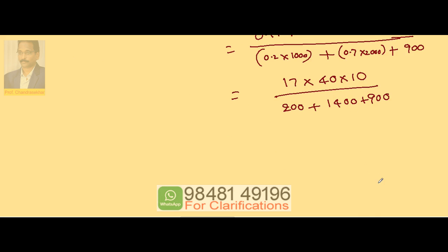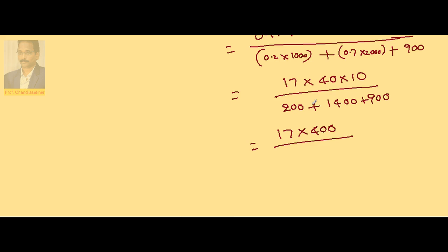So this is equal to 17 into 400 divided by 200 plus 1400 is 1600, plus 900 is 2500.